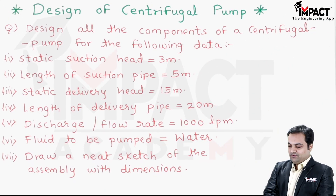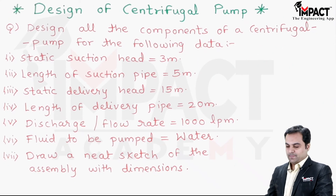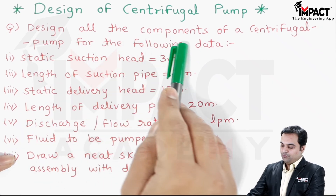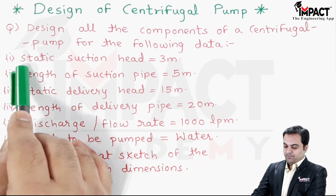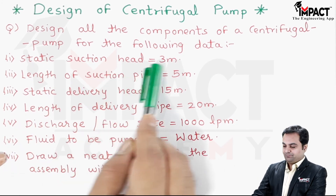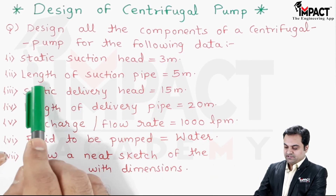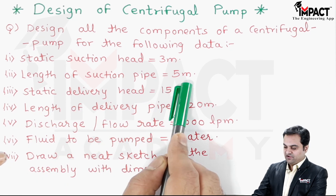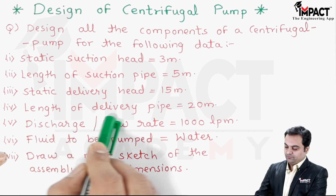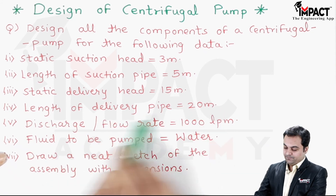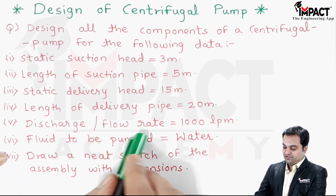In this video I'll be explaining the design of a centrifugal pump. The problem gives us the following data: static suction head is 3 meters, length of the suction pipe is 5 meters, static delivery head is 15 meters, and length of the delivery pipe is 20 meters.